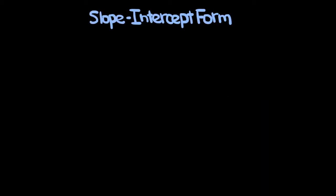Let's start off by discussing slope-intercept form, which is one way to write the equation of a line. The slope-intercept form for a line is y is equal to mx plus b.